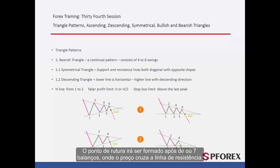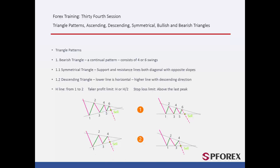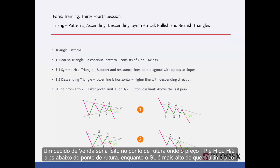The breakout point would be formed after 5 or 7 swings, where prices cross a resistance line. A sell order would be placed on the breakout point, where TP price is H or H2 pips lower than the breakout point, while SL is higher than the last peak.